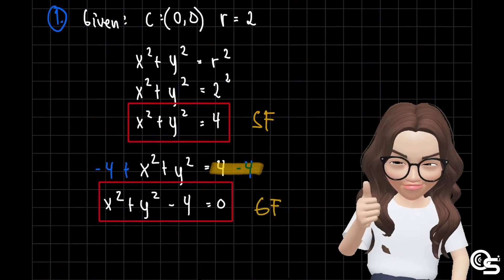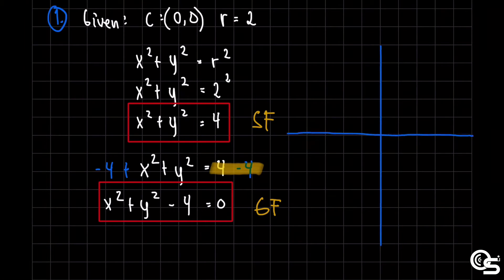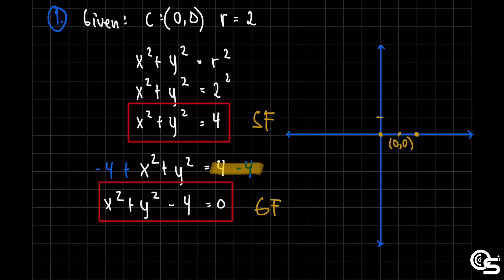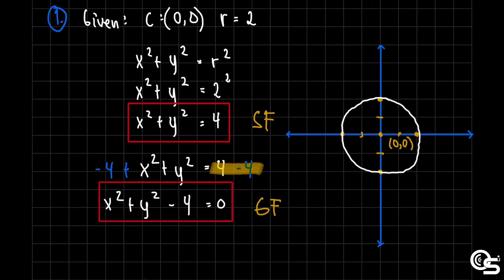Next, how are we going to graph our given? The center is at the origin, at (0, 0). So this is the location of the center. Next, we will move 2 units away from the center. Going right: 1, 2. Going up: 1, 2. Going left: 1, 2. Going down: 1, 2. After that, you just have to connect the outer points that we have plotted, and that will be your circle, with center at (0, 0) and radius of 2.